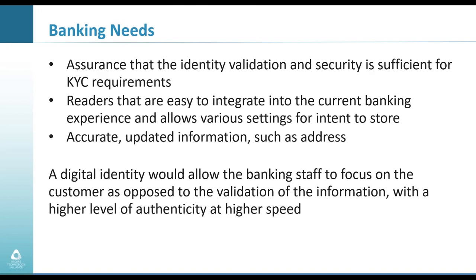Banks would also need accurate, updated information — in particular, things like address. When you're sitting and filling out your form, you write in your address, and you hope everything is correct and that two people didn't make the same mistake. Your analog driver's license today is updated maybe once every five years, so you do not get updated information. But if you have that digitally, you can do that validation live, and if there is a disconnect, you can raise a flag.